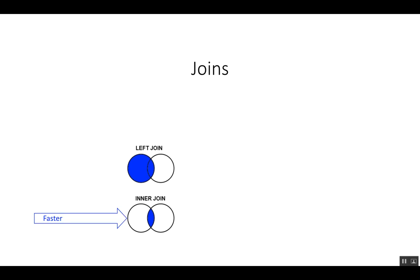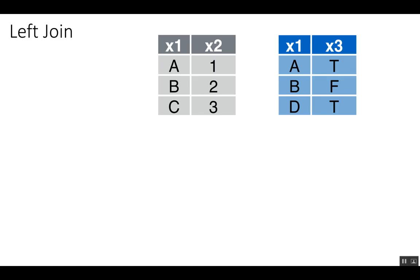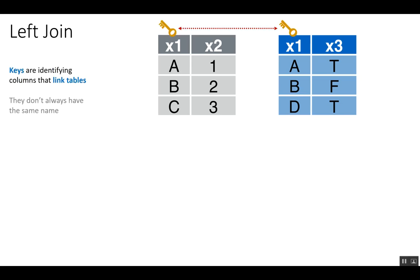Let's look at this with some data. By the way, the inner join is faster, particularly in a SQL lookup. A left join looks like this. Pretend we have table gray and table blue — they share a common key, both named X1, with the same types of values. These two keys are related to each other, and that's what we need to join on. We also have X2 and X3 columns where information unique to each table is stored.